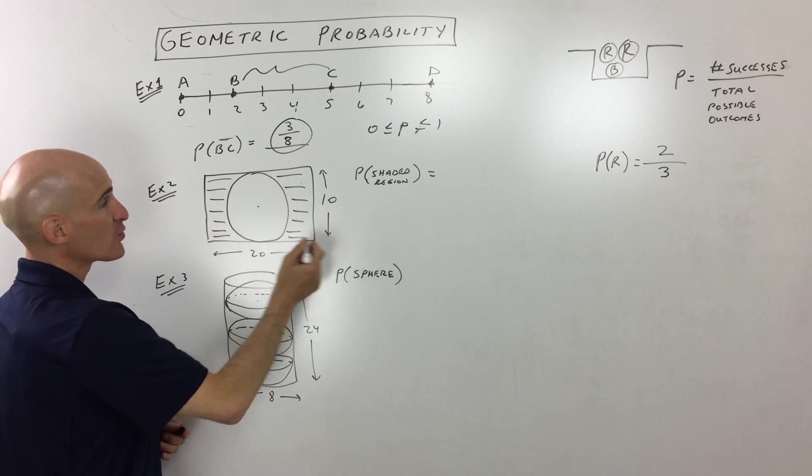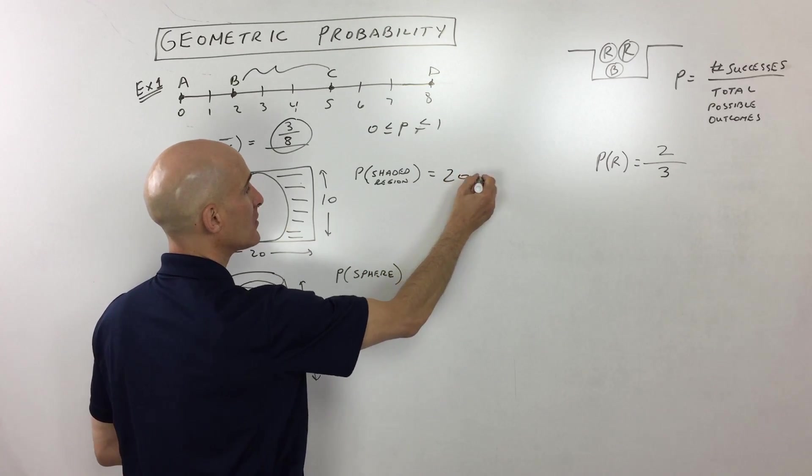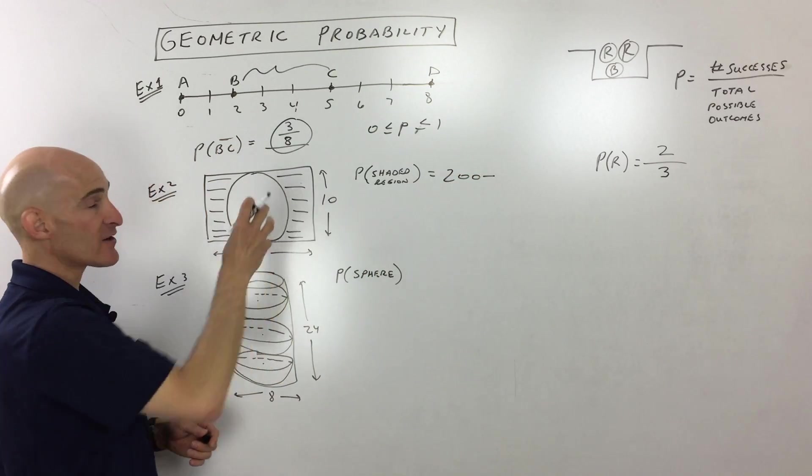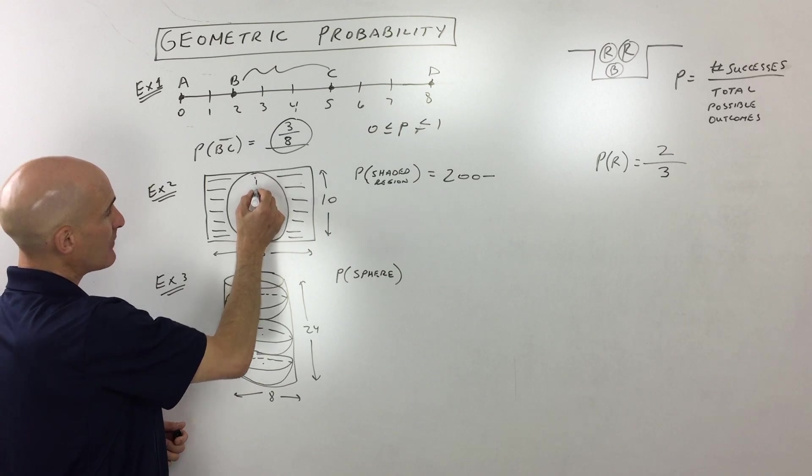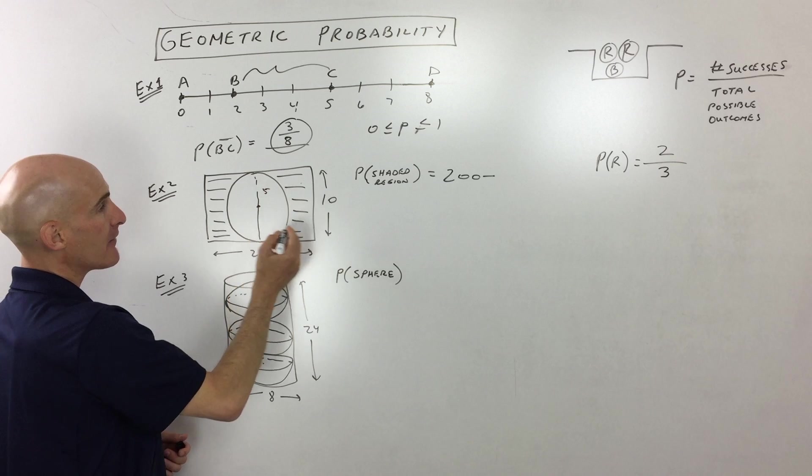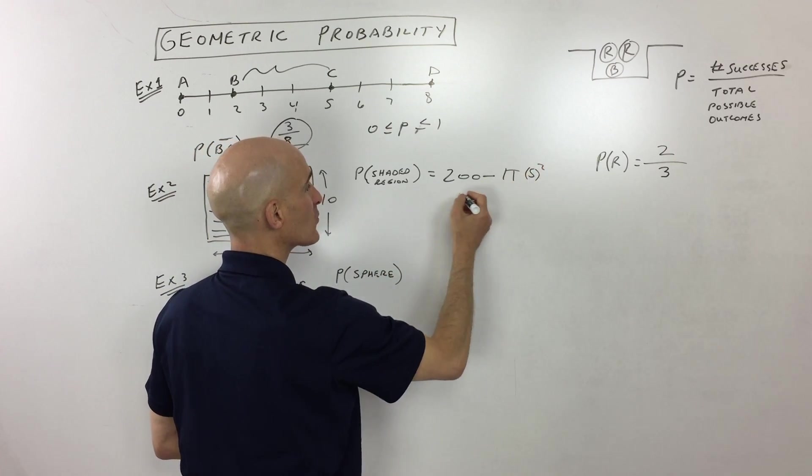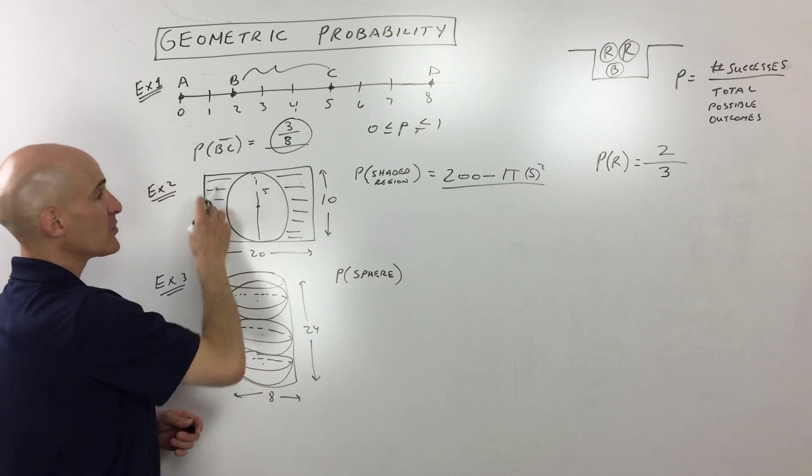So to get this shaded region, we're going to take the total area, which is 10 times 20, that's 200, minus, we're going to subtract off this circle. Well, you can see that the diameter of the circle is 10, which means that the radius is going to be five, which means we're subtracting pi r squared, which is pi times five squared. So that gives us the shaded region.